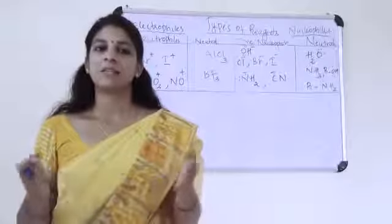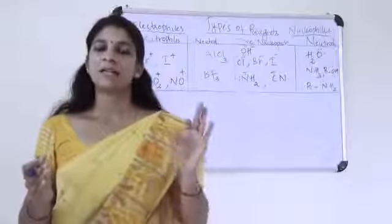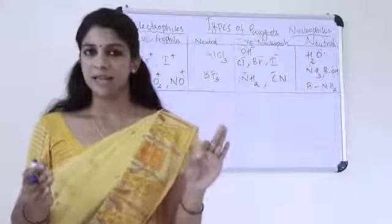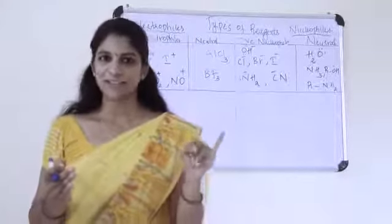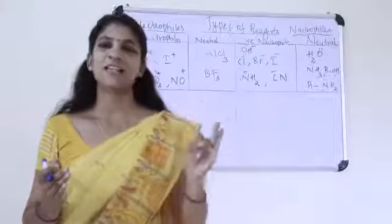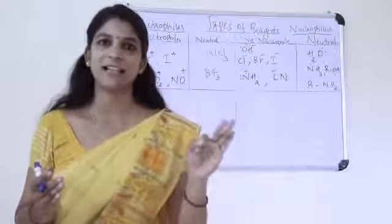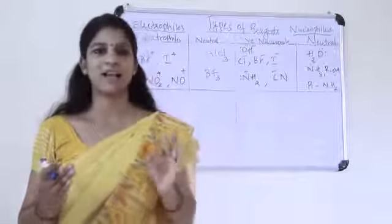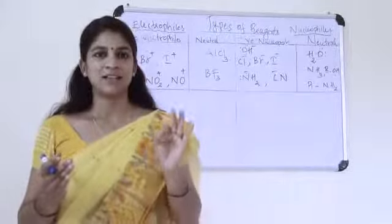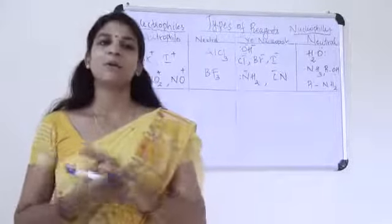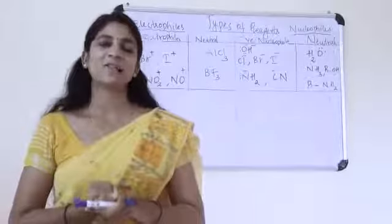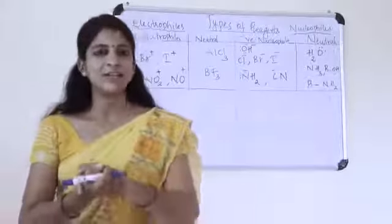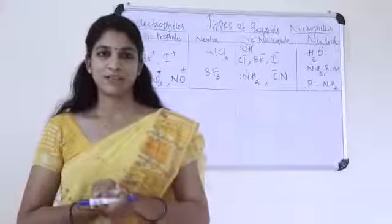In organic chemistry, mainly there are three types of reagent. The first one is electrophiles, the second one is nucleophiles, and the last one is free radicals. Now we are going to discuss about the difference between electrophiles and nucleophiles.